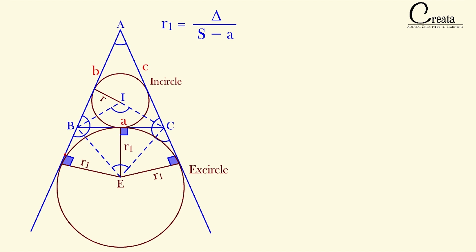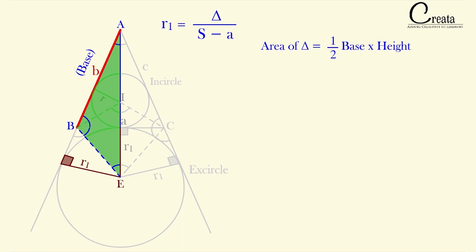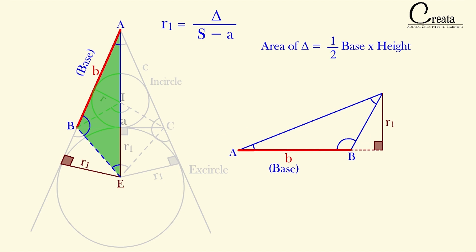Let's see the proof of this formula. Are you able to observe triangle ABE? Can we calculate the area of this triangle ABE? We know the area of a triangle is half into base into height. Let's take side b, that is AB, as the base of this triangle. The height will be the perpendicular distance from the opposite vertex, and we can take r1 as the height. So we get the area of this triangle is equal to half into b into r1.